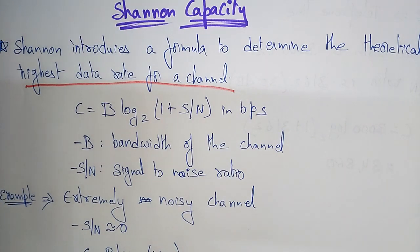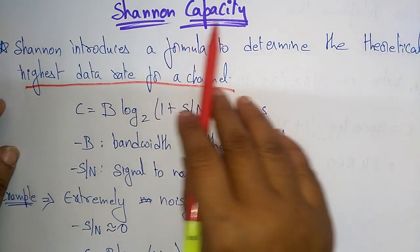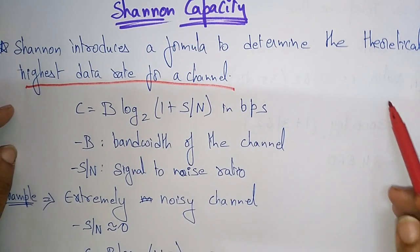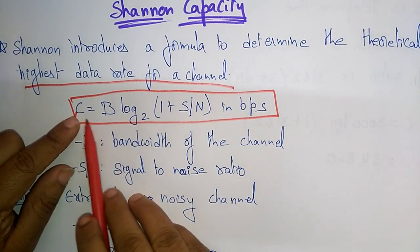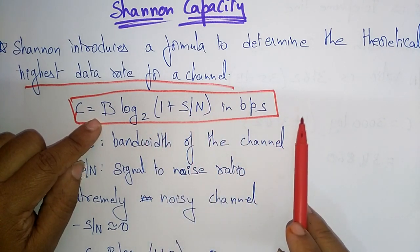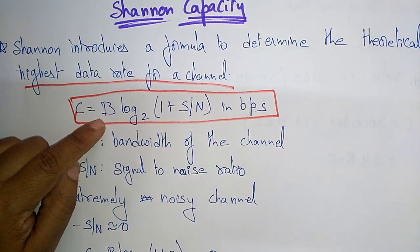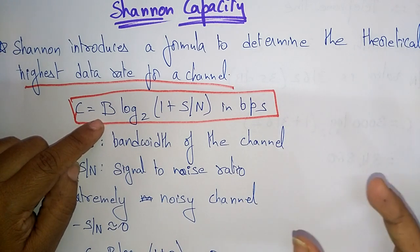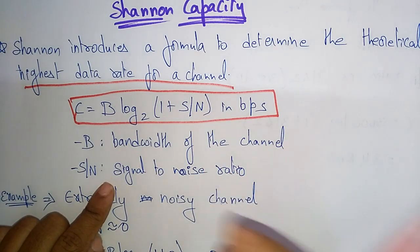For any transmission media, if you want to know the highest data rate — how much capacity that channel has — it can be calculated using Shannon capacity. The formula is: C = B log₂(1 + S/N) in bits per second, where B is the bandwidth of the channel and S/N is the signal-to-noise ratio.